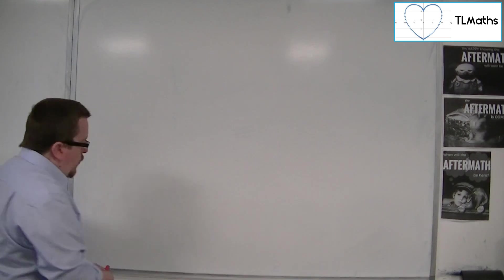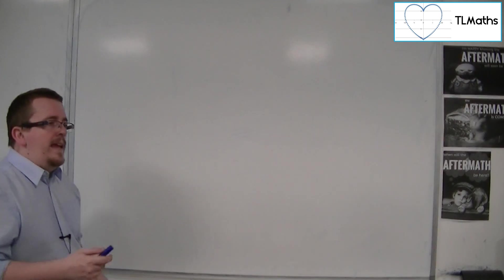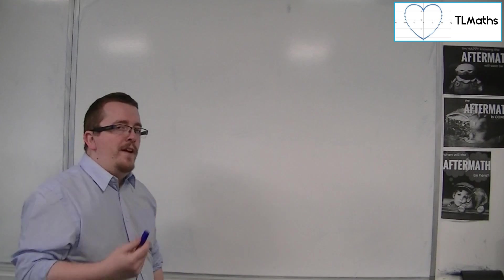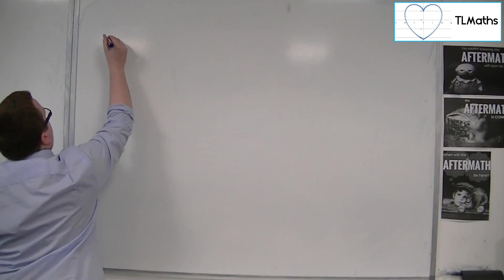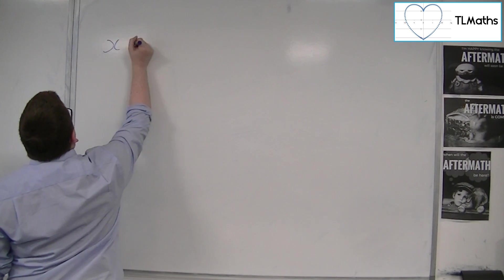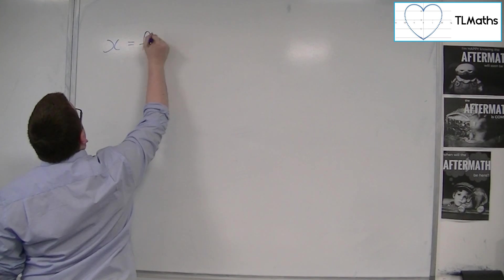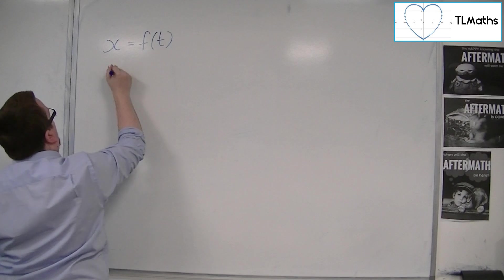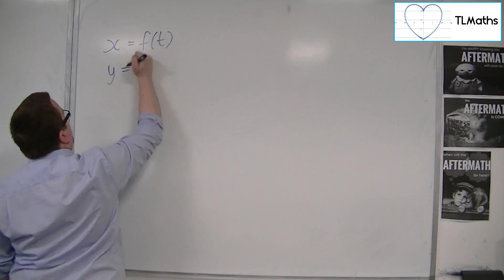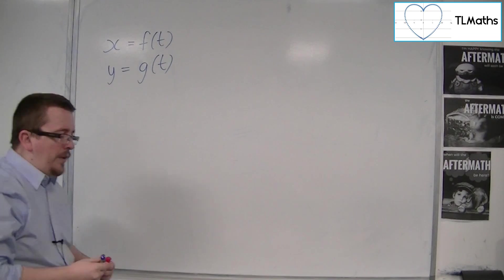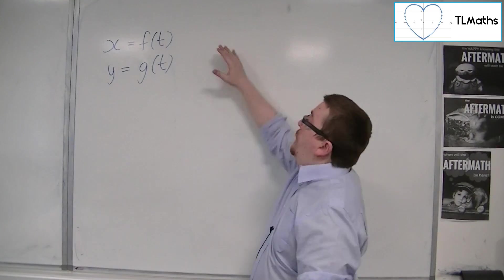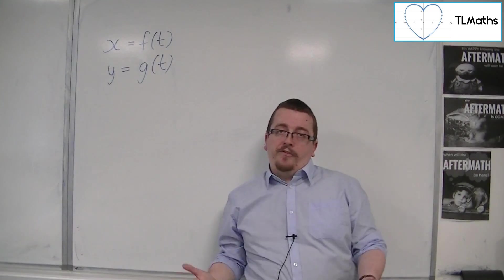So what I mean by a parameter is another variable. For example, you might have that x is equal to a function of t, and y is also a function of t. I'll write it as another function. So x here is given in terms of t, and also y is given in terms of t.